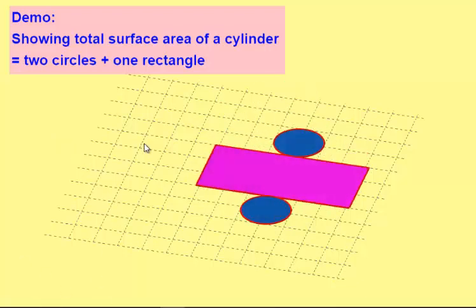Here is a rectangle of the curved surface area of the cylinder and two circles, the top base and the bottom.